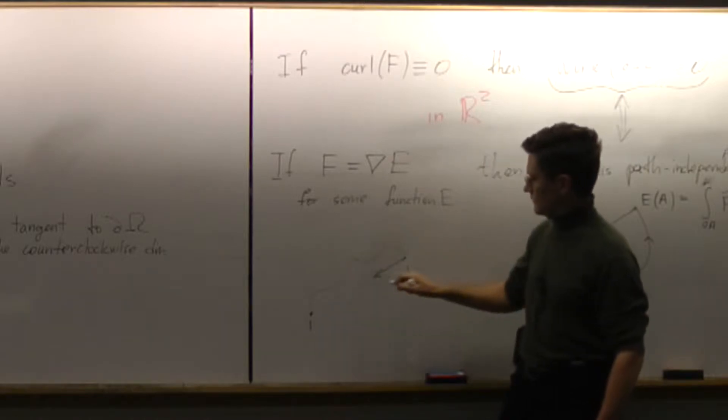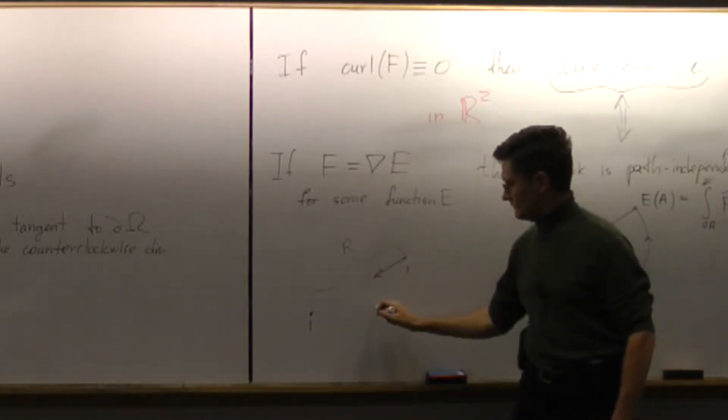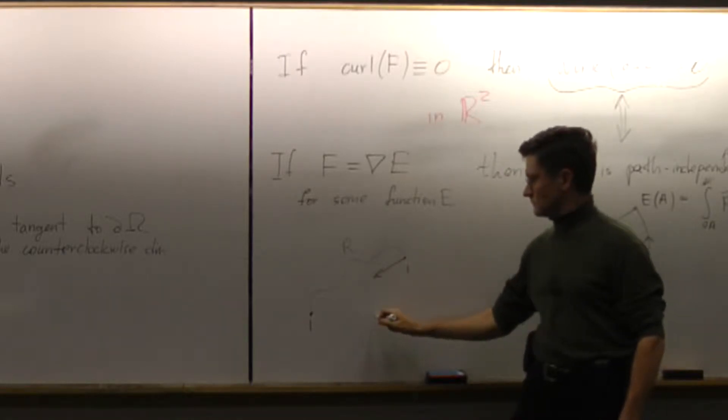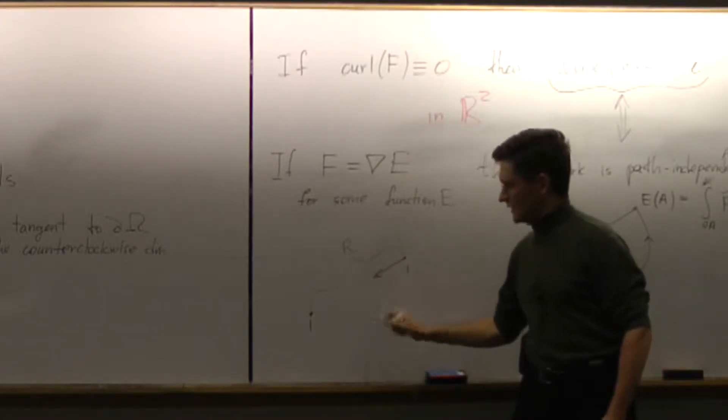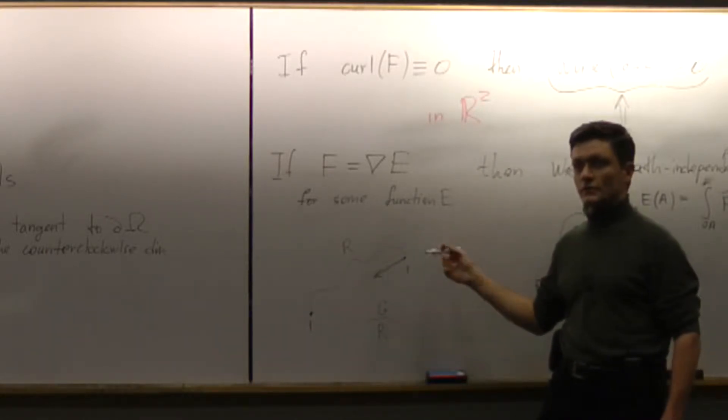It will be dependent on the distance. So it will be something like what? Gravity constant, some constant. Some gravity constant g divided by the distance squared. Exactly.